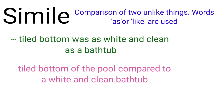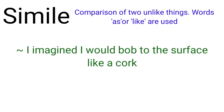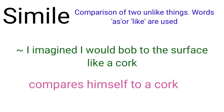While going down towards the bottom, he saw the bottom of the swimming pool and compared it to a white and clean bathtub. The second simile is: 'I imagined I would bop to the surface like a cork.' As he was getting drowned and going down into the water, he thought that he would come up to the surface like a cork — a very light material which floats on water.